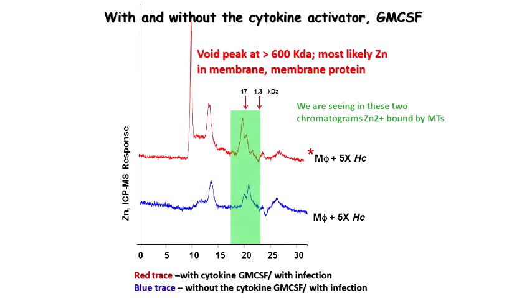First, with and without the cytokine — that's a question asked: do you really need this thing? Is it necessary? These are the peaks we're going to look at. What we're seeing here in these two chromatograms is zinc 2+ bound by metallothionines. We see this hundreds of times — not like repeating an experiment three times. This little star here means activated.